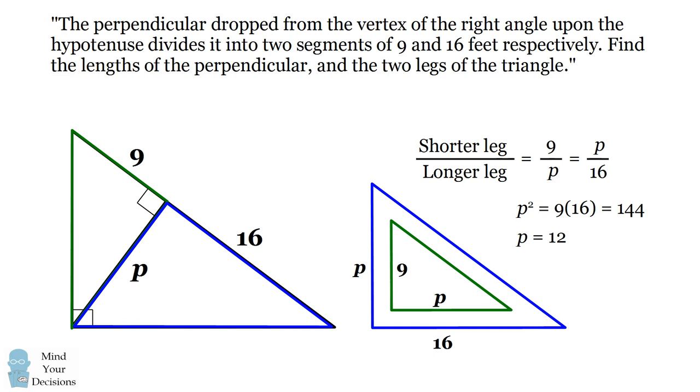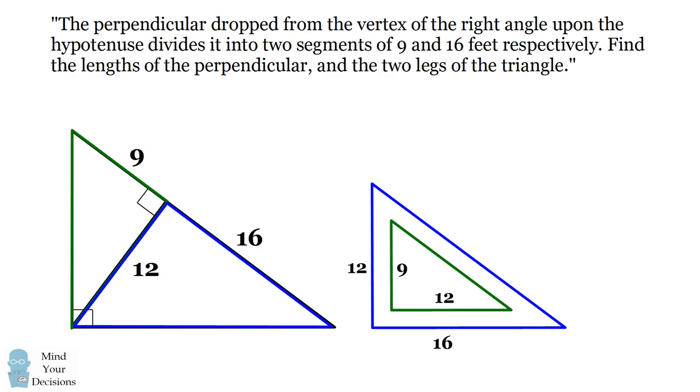So we've solved for one part of the problem that the perpendicular has the length of 12. We now need to solve for the two legs of the triangle. Notice that each leg of a triangle is equal to the hypotenuse of one of these smaller triangles. We could use the Pythagorean theorem to figure out the legs.